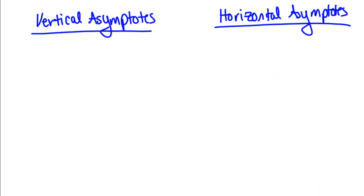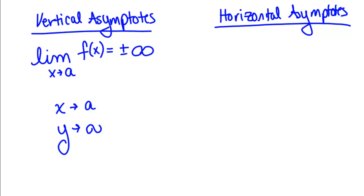So another comparison between vertical and horizontal asymptotes. With vertical asymptotes, you are letting X get close to a fixed number, and the Y value is going to plus or minus infinity. So here, X goes to a number, Y goes to infinity.